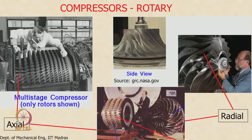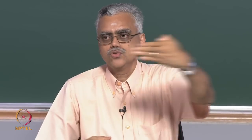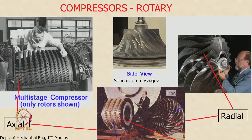Rotary compressors come in two kinds: the radial or centrifugal compressor, and the axial compressor. The axial compressor is so named because the shaft runs along the axis and air flows along the axis of the shaft. The rotor blades are mounted on a drum, and there are also stator blades in between each set of rotor blades. In the axial compressor, blades rotate and air flows from inlet to outlet along the shaft axis.